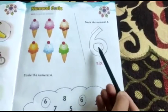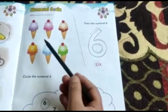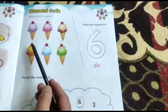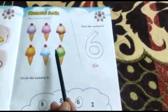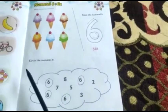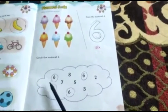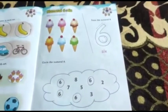We will trace these numerals. The number of objects. We will count them. One, two, three, four, five, six. How many are six? Six ice cream cones are here. Now, we have to circle the numeral 6, we have to find and circle it.